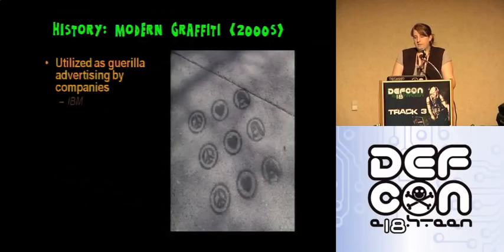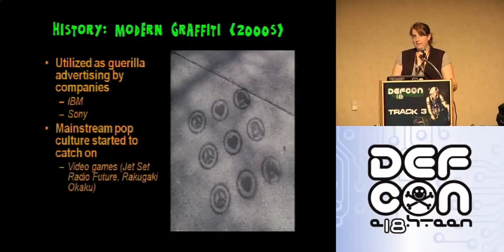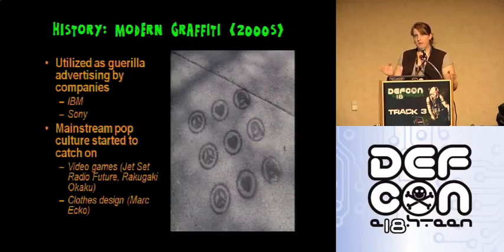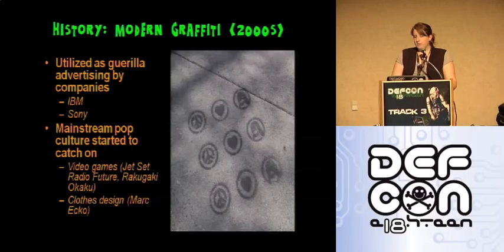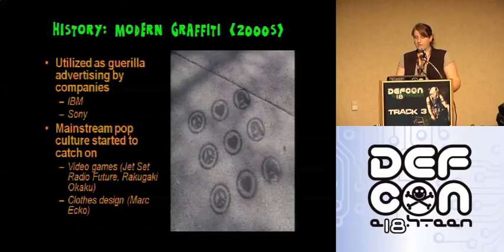After being relatively dormant in the 1990s, graffiti art has started to become active again in the past 10 years. Graffiti is being used by companies such as Sony and IBM as a way to break into guerrilla advertising — basically a buzzword for cheap and dirty ways to catch someone's eyes. It is also becoming more popular in mainstream pop culture, showing up in video games like Jet Set Radio Future, Sony's Rakugaki Okaku series, Getting Up Contents Under Pressure, Super Mario Sunshine, Half-Life, and The Urbz: Sims in the City. Even clothes designer Marc Ecko has publicly stated that graffiti art is without question the most powerful art movement in recent history.